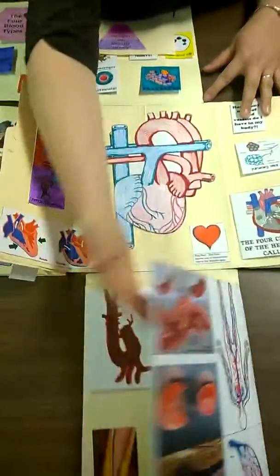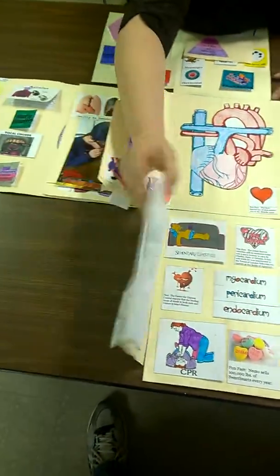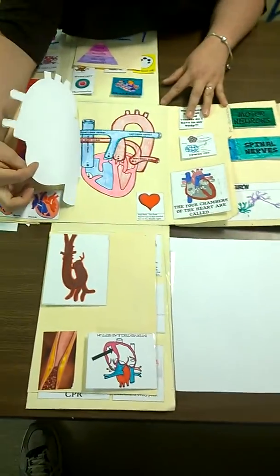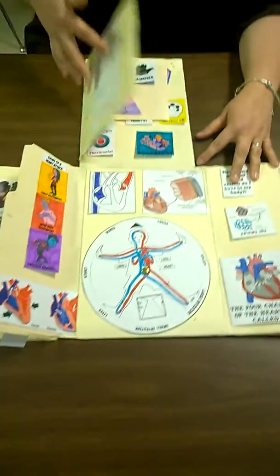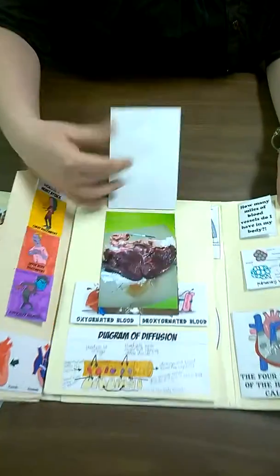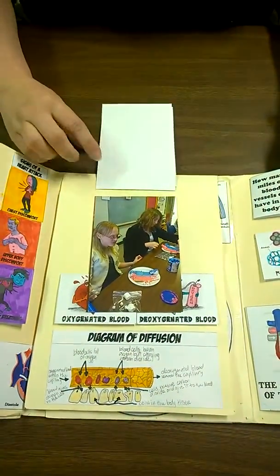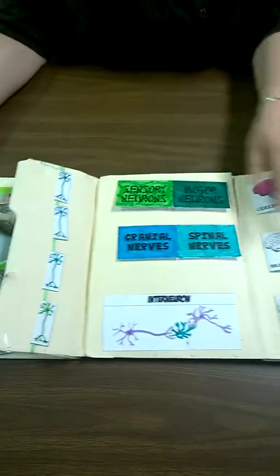Even more paper models. And a heart model. Plenty of pictures of the different activities and different dissections that the kids did throughout the year.